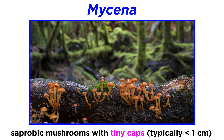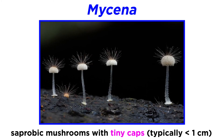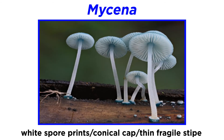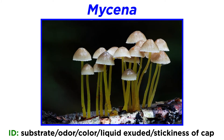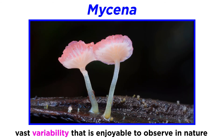Mycena is a large genus of saprobic mushrooms with caps that are rarely larger than a centimeter in diameter. Often overlooked because of their small stature, once you stop and look at these mushrooms, you will begin to value their beauty. Mycena species have white spore prints with a conical shaped cap and a thin fragile stipe. Identification of species requires observation of the substrate the mushroom is decaying, as well as odor, color, liquid exuded when the mushroom is damaged, and stickiness or sliminess of the cap. Mycena species have a vast variability that will be rewarding when identifying species in nature.